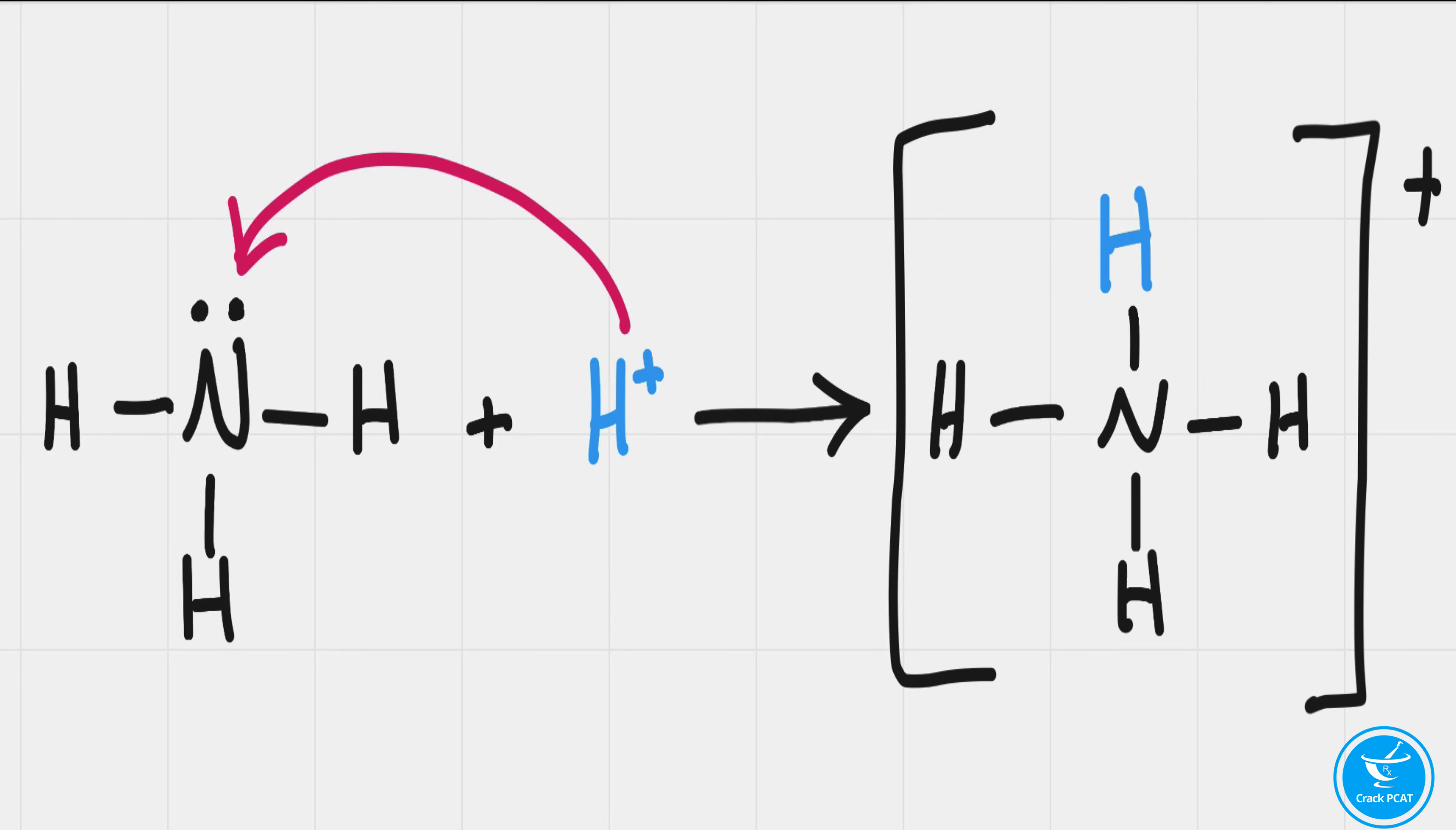The point is this: an electron does not always have to be contributed by each participating atom to form a bond. In the case of ammonium, the hydrogen ion uses the lone pair on the nitrogen.